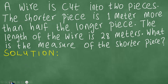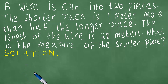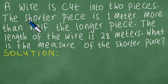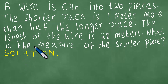We have this word problem here and we want to solve it, so let's get started. A wire is cut into two pieces. The shorter piece is one meter more than half the longer piece. The length of the wire is 28 meters. What is the measure of the shorter piece?